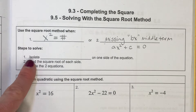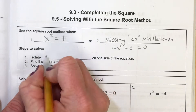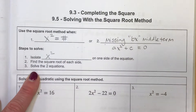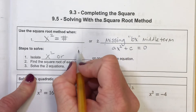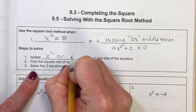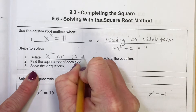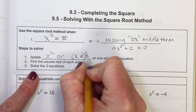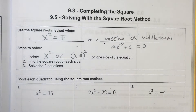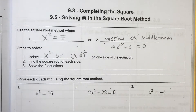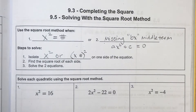The steps to solve would be: number one, isolate your x squared — or you might see a parentheses, like (x + number) squared. You want to isolate your square part on one side of the equal sign. Then number two, take the square root of each side. And then number three, solve your two equations.